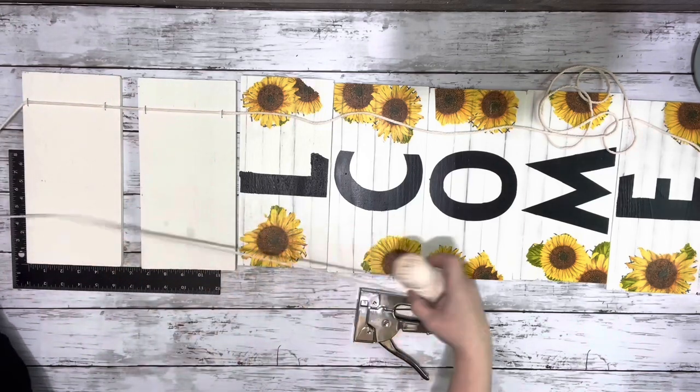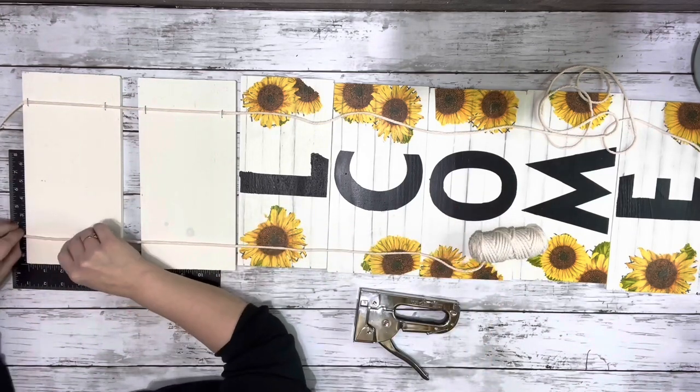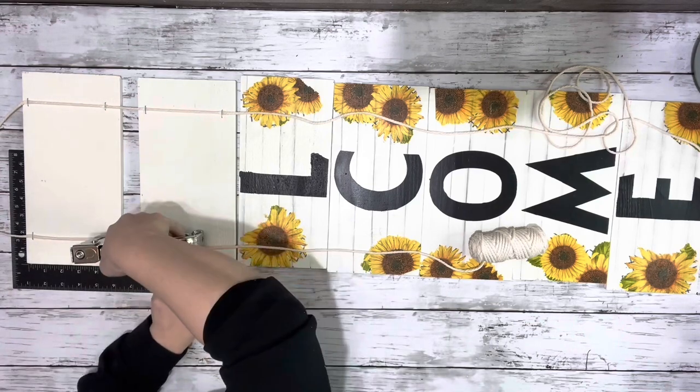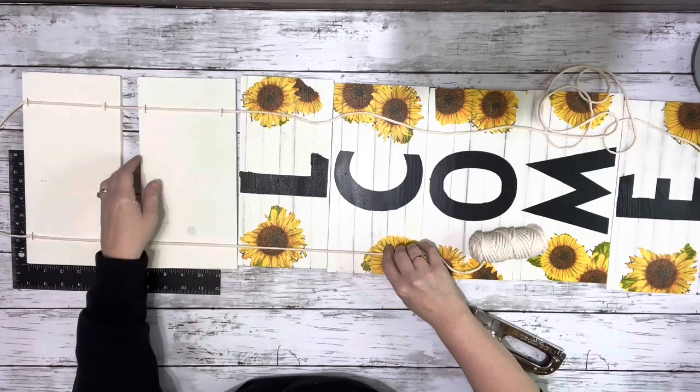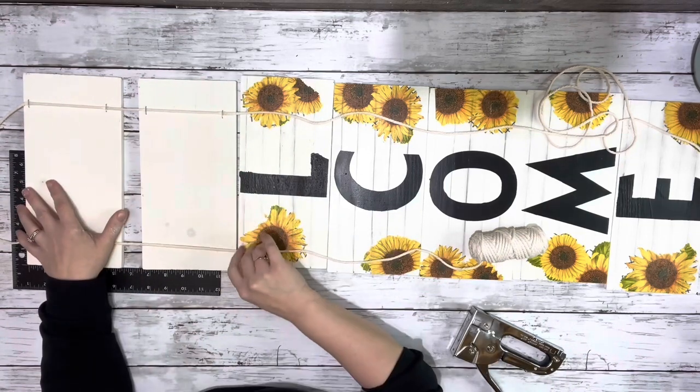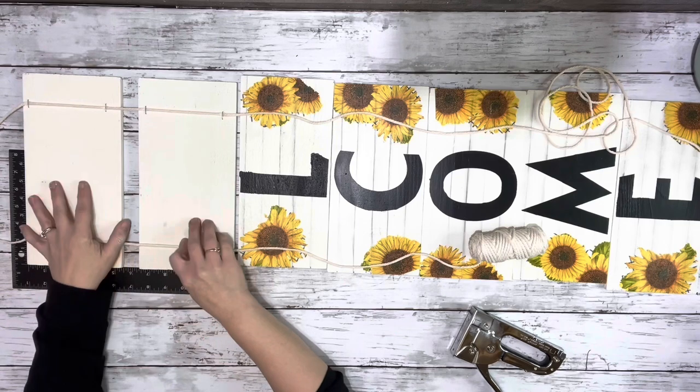And then I just left enough for a hanger, and then stapled again on that top piece. And then made sure that one was nice and straight, and that side was one inch apart as well, and stapled that down.